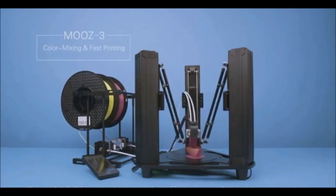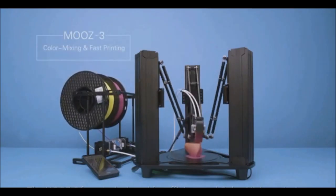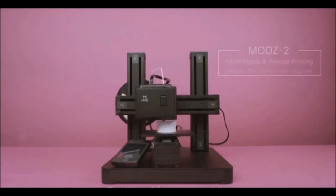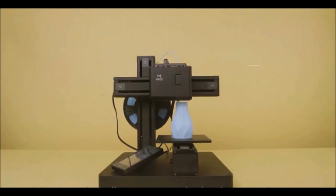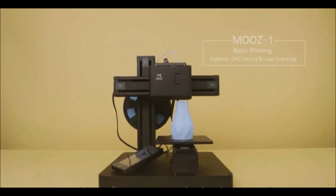The Moose 3 form is designed for efficient and color mixing printing. The Moose 2 form, meanwhile, is the solution for stability and unparalleled precision. And the Moose 1 form allows you to create simple prints in an effortless way.